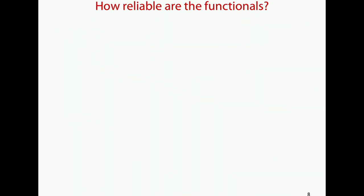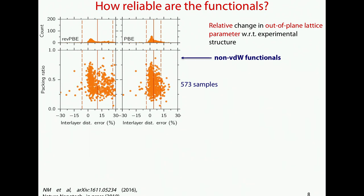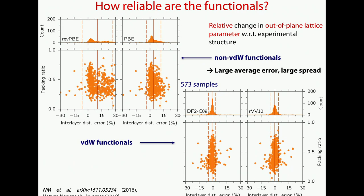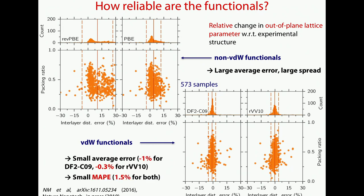A few words about the functionals we chose. If you look at the structural parameters of these compounds computed with DFT without a van der Waals functional and look at the error in the interlayer distance — the out-of-plane axis — versus the packing ratio, you see a big spread and a big systematic error. Now if you instead use the two van der Waals functionals we have chosen, the spread is much reduced and the systematic error is almost absent.